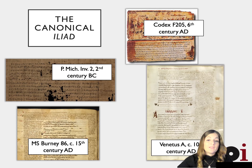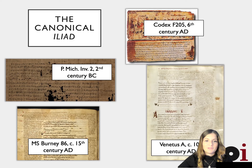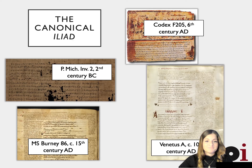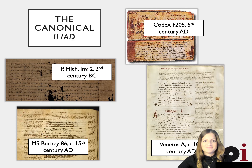Filtered through the medieval copies, we then get our own annotated and edited works from the scholarly tradition of the Enlightenment, including this heavily annotated manuscript known as the Burney manuscript or the Townley Homer, named after one of its early owners — that's the one here on the bottom left. The Greek text of the poem is just the text in the middle, and everything surrounding it is marginalia.